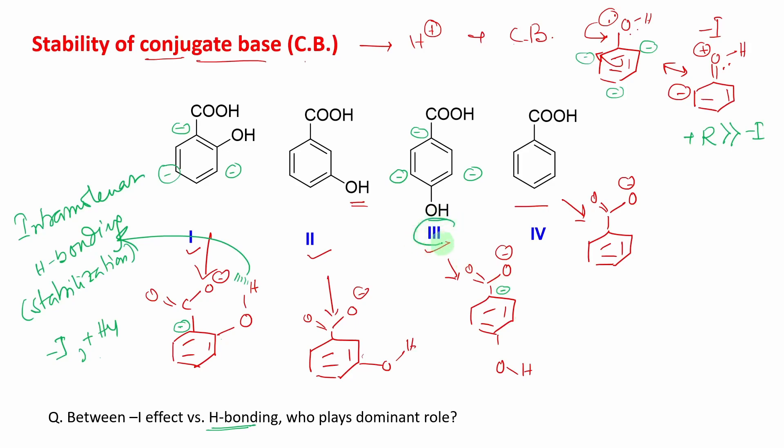Now if you look at OH group at para position, so obviously no minus I effect, but this plus R effect will try to destabilize the conjugate base compared to the unsubstituted one, benzene.